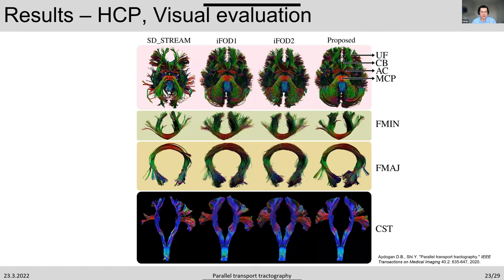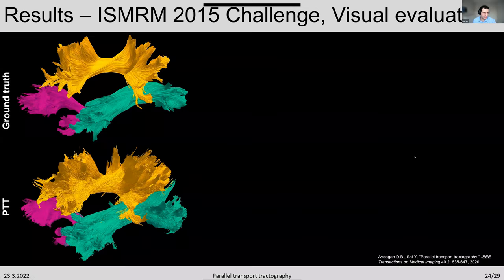Here are visualizations using HCP data. The results look very well organized with the parallel transport technique, similar to the deterministic approach, while having brain coverage similar to probabilistic approaches — achieving what we wanted from the beginning. This holds pretty much for all regions of the brain. Here are also results from the ISMRM 2015 challenge, where visual inspection shows nicely organized fiber bundles resembling the ground truth.